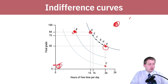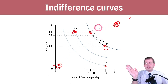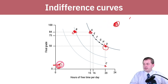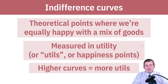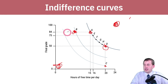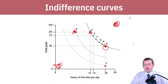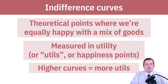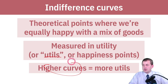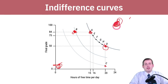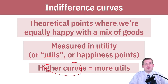To maximize utility — to be the happiest possible — you want to be on the curve that is as far up in the corner as possible. If you're down on a lower curve, you're less happy. To summarize: indifference curves are theoretical but represent points where you're equally happy with a mix of goods. Alexi is equally happy getting an 84 with 15 free hours as getting a 50 with 20 free hours. We measure happiness in utils — the higher the curve, meaning closer to that upper corner, the more utils and the better off you are.